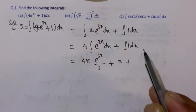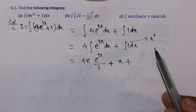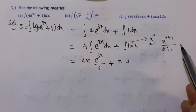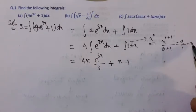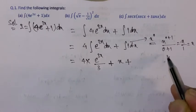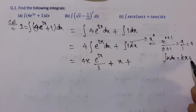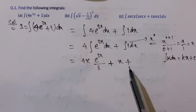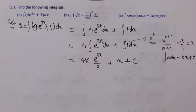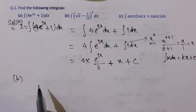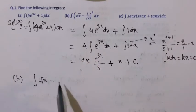1 can be written as x^0, then applying the x^n formula: x^(0+1)/(0+1) = x/1 = x. So the integration of 1 is x. In general, the integration of any constant is: constant × x + c. Since we can take the constant out by the rule, what remains is 1, whose integration is x. Since we are doing indefinite integration we add plus c, the constant of integration.